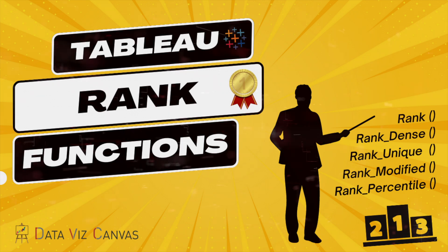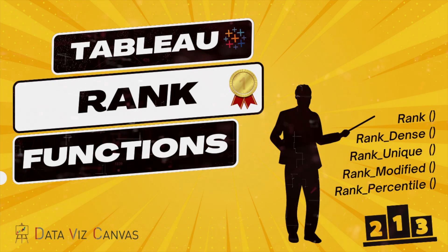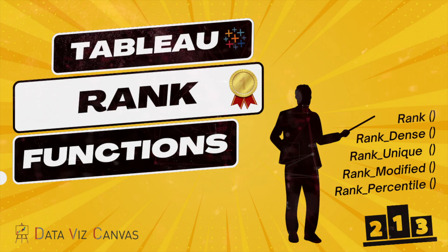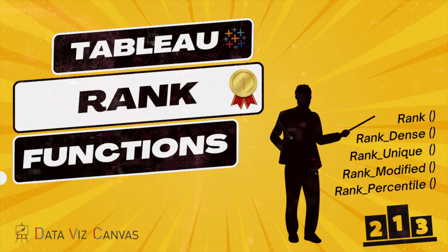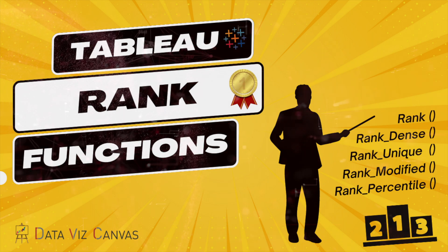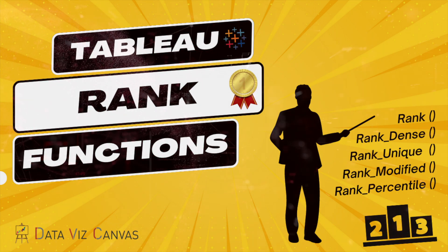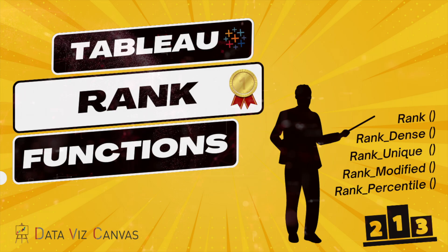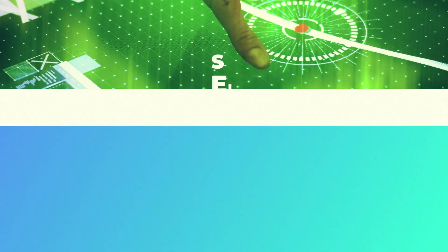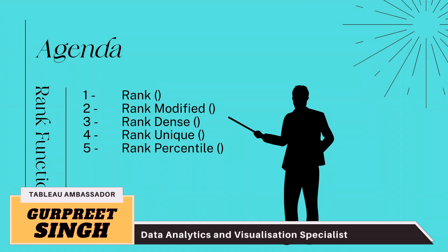Tableau table calculations has five rank types, and often these different rank types can be confusing. In today's tutorial, I'm going to explain each rank type and how it's different from the others. Welcome back — this is Gurpreet from DataWiz Canvas, and in today's tutorial I'm going to talk about the different rank types in Tableau.